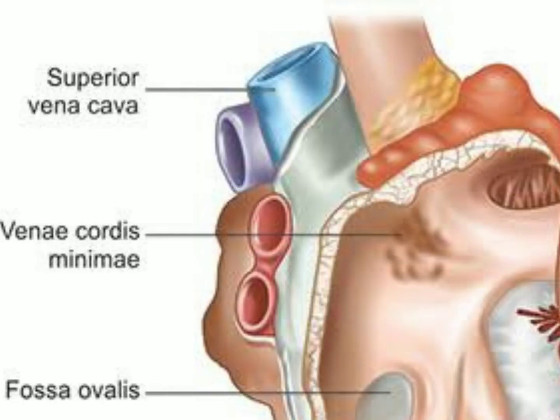There are two kinds of veins that open directly into the right atrium: the anterior cardiac vein and the venae cordis minimae. The venae cordis minimae drain directly into all four chambers of the heart — they are the small openings you can see in the given slide. All the veins of the heart open into the coronary sinus except the anterior cardiac vein and the venae cordis minimae.